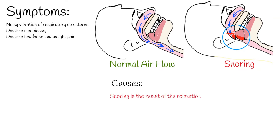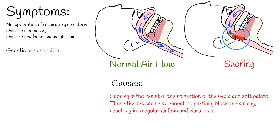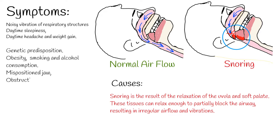Snoring is the result of the relaxation of the uvula and soft palate. These tissues can relax enough to partially block the airway, resulting in irregular airflow and vibrations. Risk factors for snoring include genetic predisposition, obesity, smoking, and alcohol consumption.